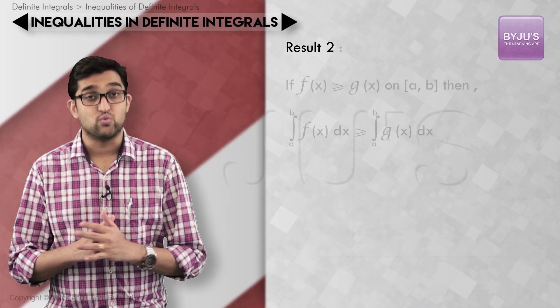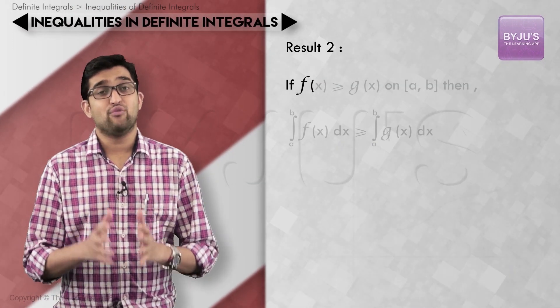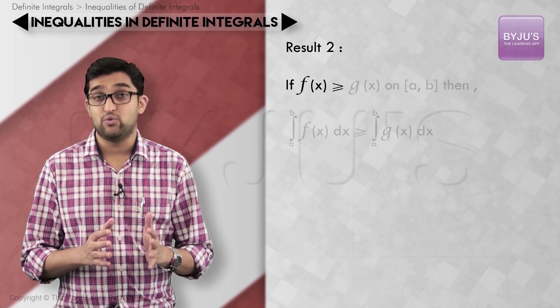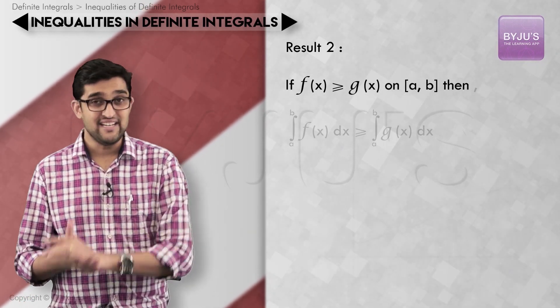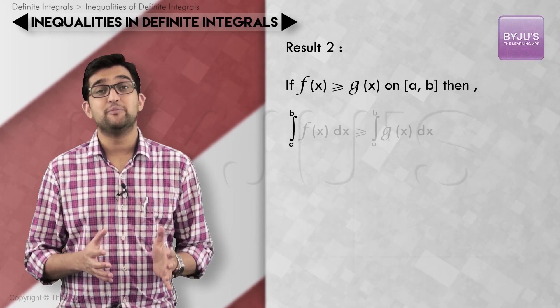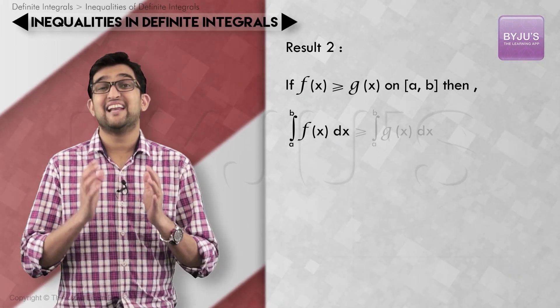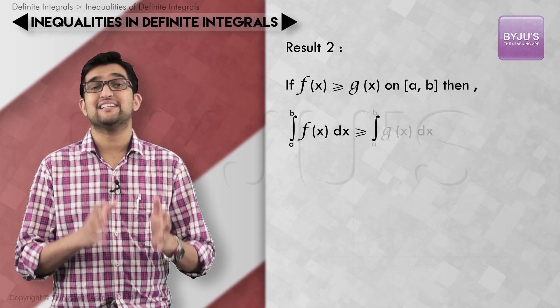Result 2: if f(x) is greater than or equal to g(x) on the closed interval [a, b], then integral a to b f(x) dx is greater than or equal to integral a to b g(x) dx.